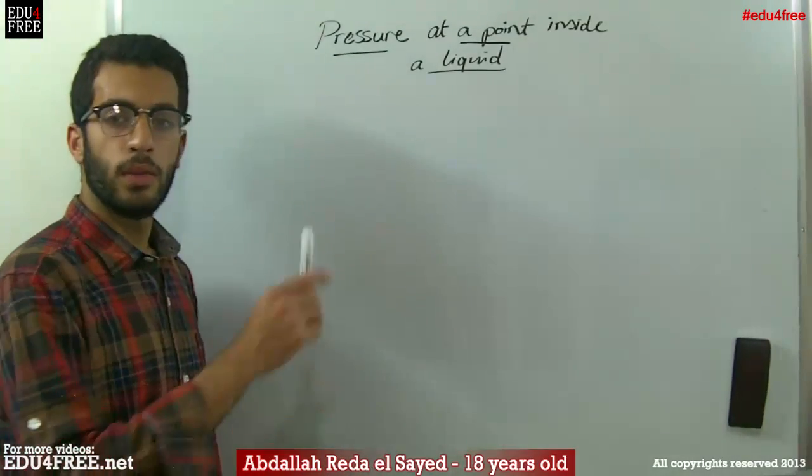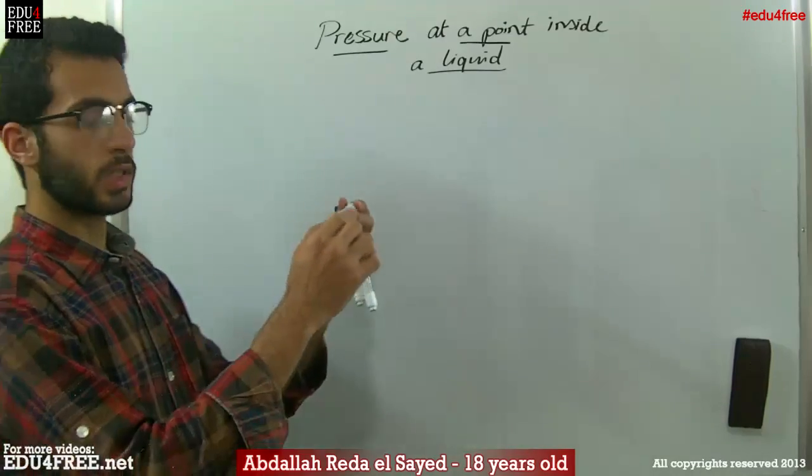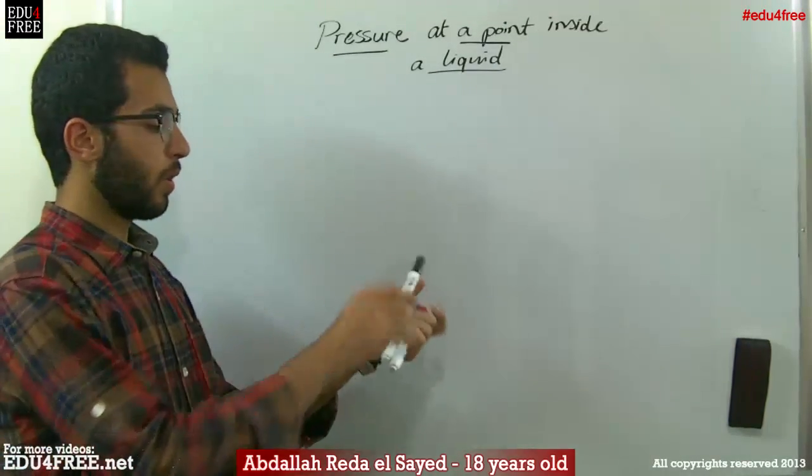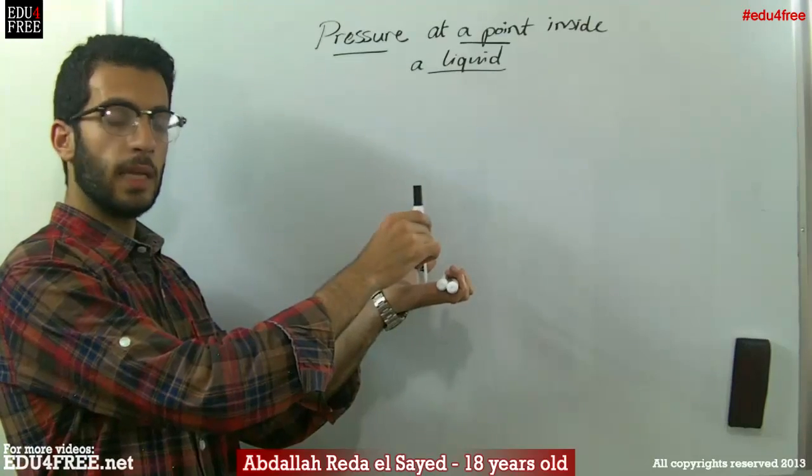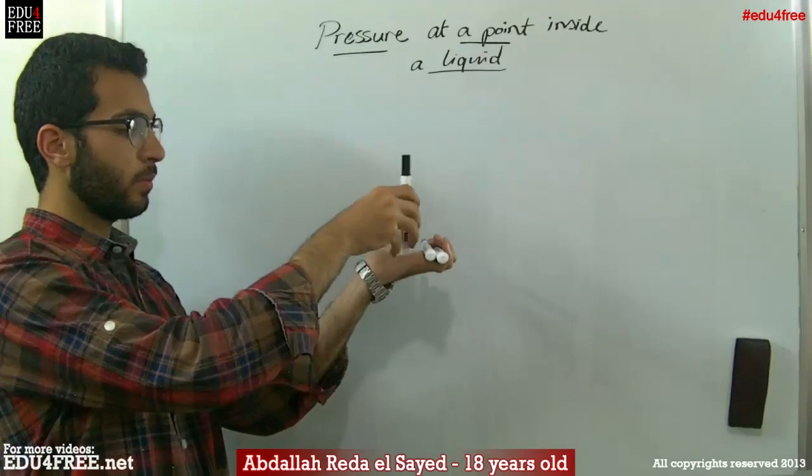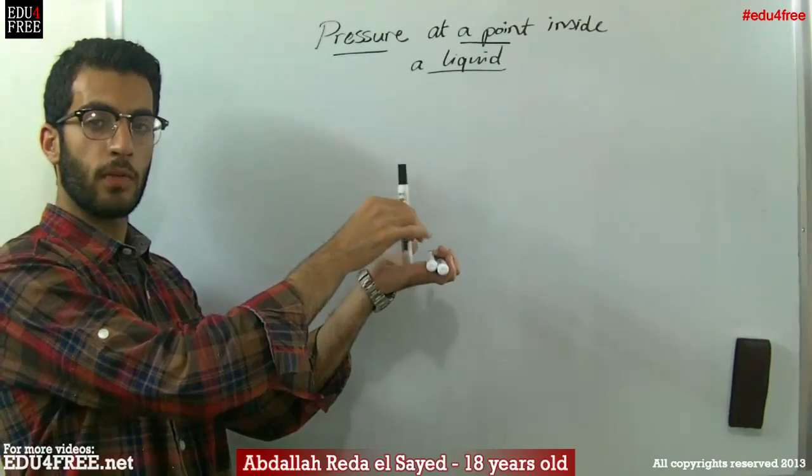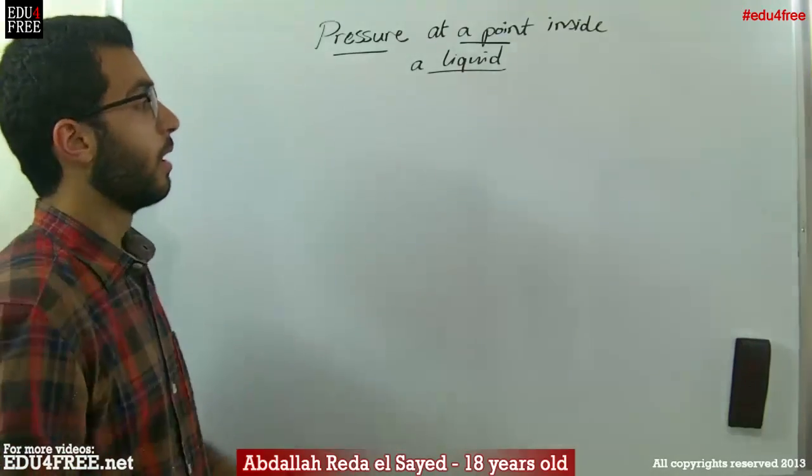For example, this marker has this cross-sectional area, so if I put it over my hand like that, its weight is exerting force per that cross-sectional area over my hand. That's pressure.